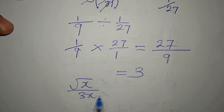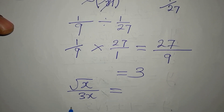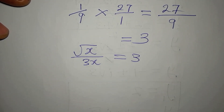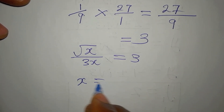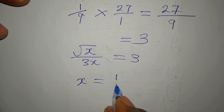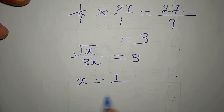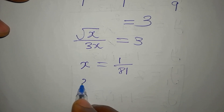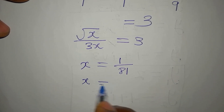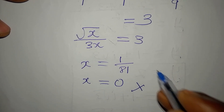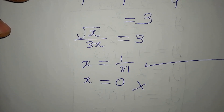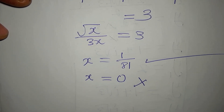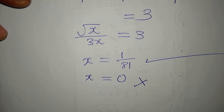The equation square root of x over 3x equals 3 is satisfied, confirming our answer is x equals 1/81. The solution x equals zero is rejected. Thank you for watching, and if you haven't subscribed to my channel, please subscribe.